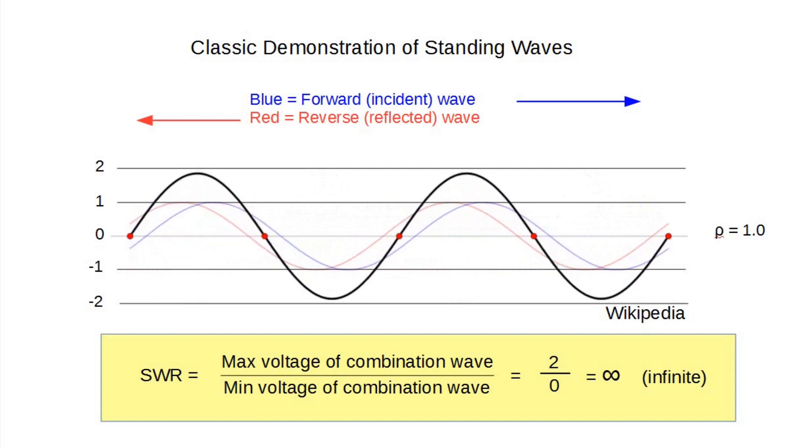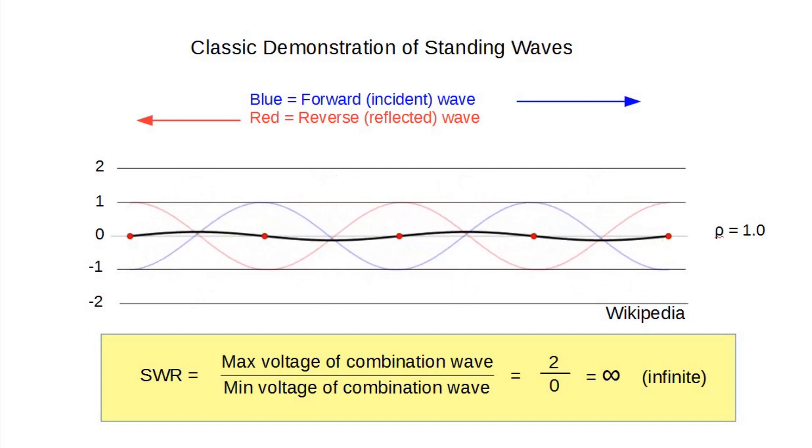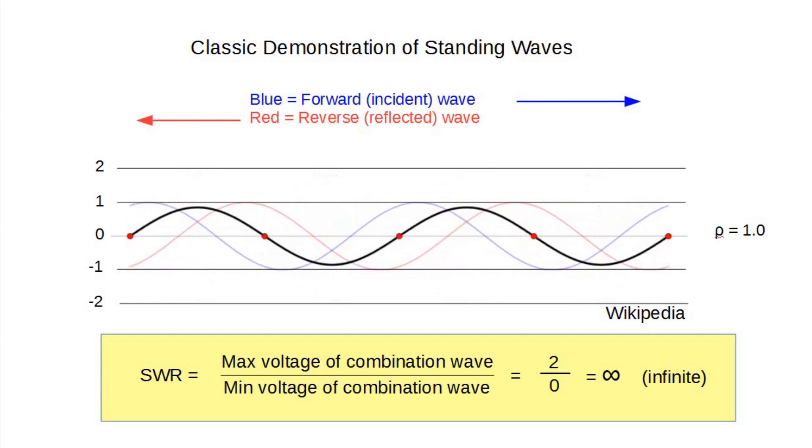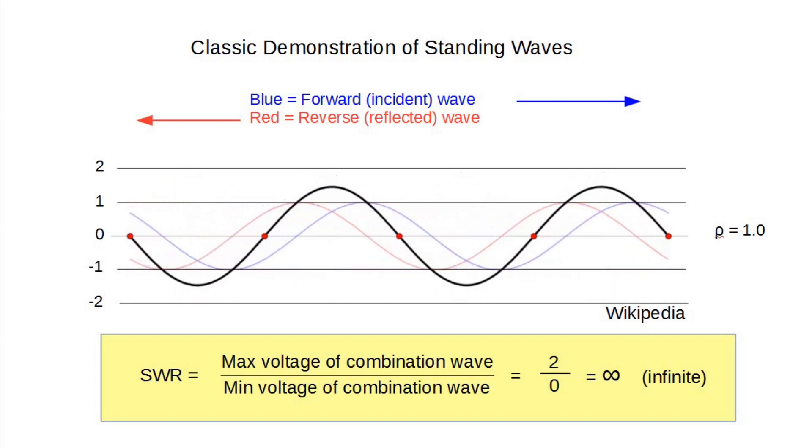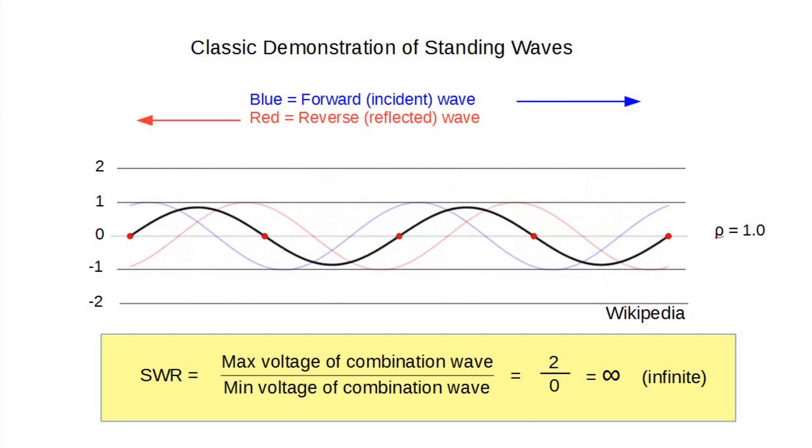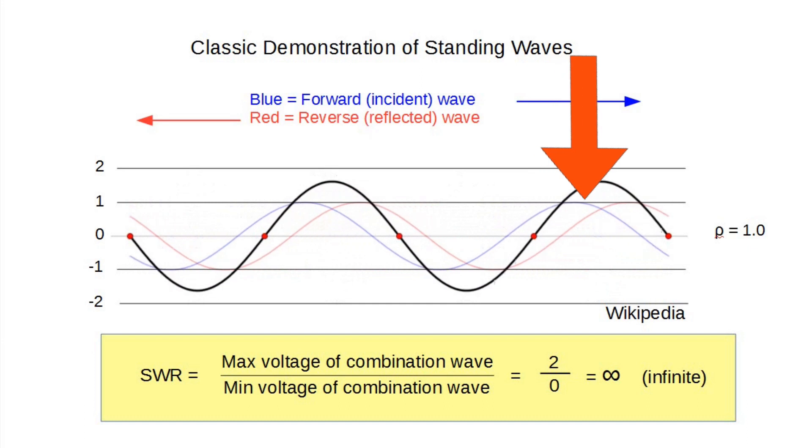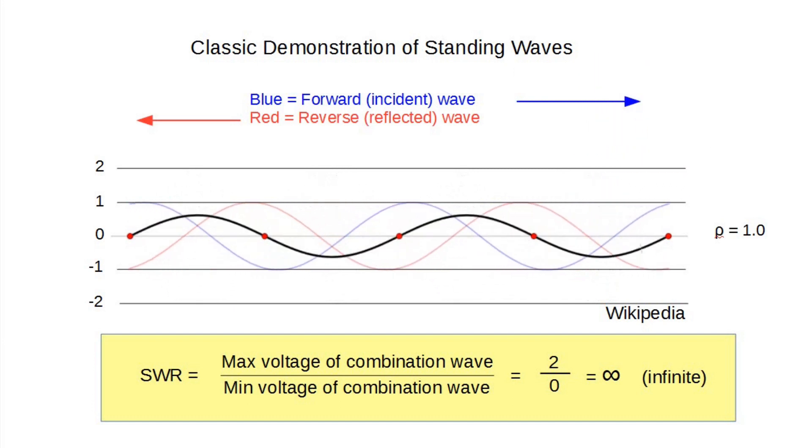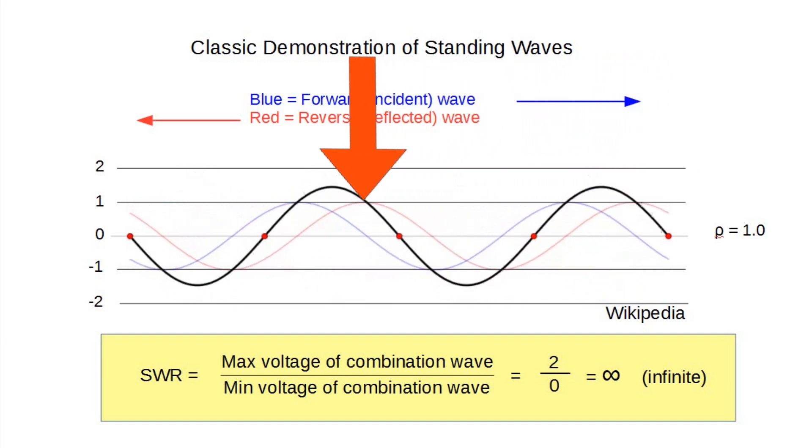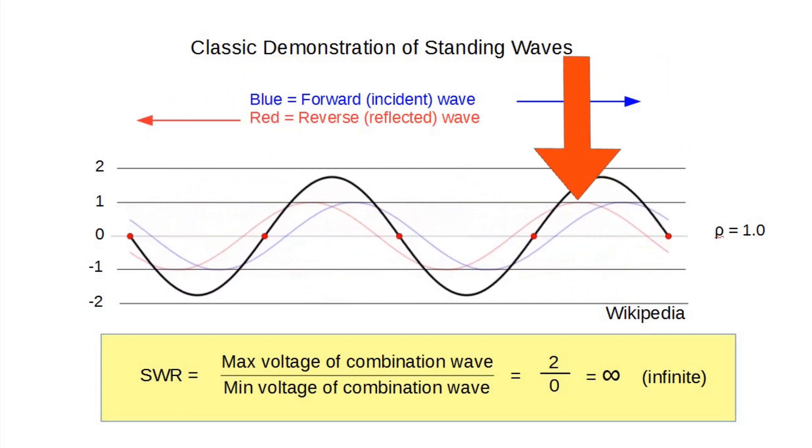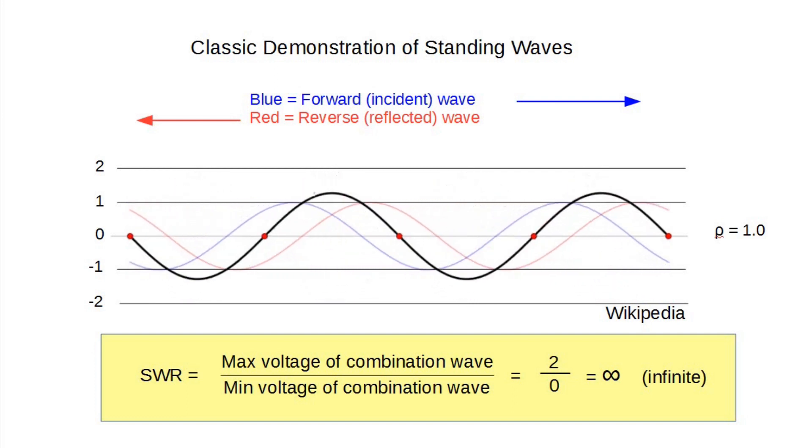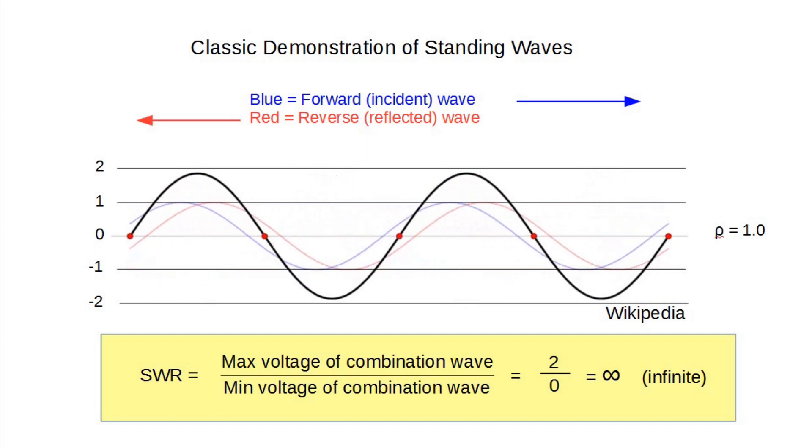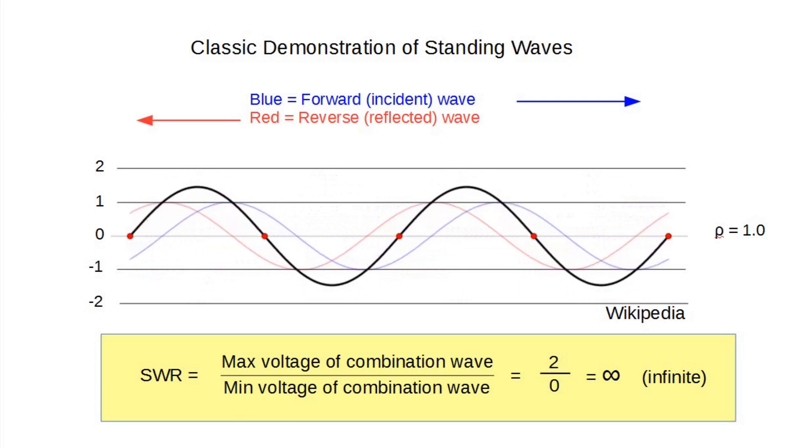This animated drawing from Wikipedia shows the classic explanation of a standing wave. This case, which in practice would mean a completely broken antenna system, has a reflection coefficient of one, meaning all the power is reflected, leaving none to be radiated. The forward wave is in blue, and you can see the arrow following the crest of the blue wave from the transmitter toward the antenna. The reflected wave is in red, and you can follow the arrow to see it head back toward the transmitter. Now, the black wave is the instantaneous sum of the two waves. It looks like a wave just standing there. It isn't going anywhere, so the sum of the power transfer is zero.